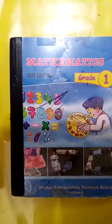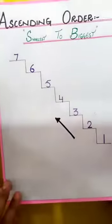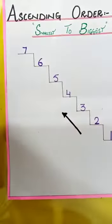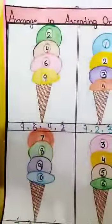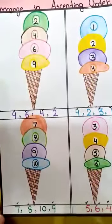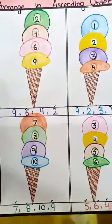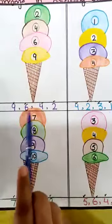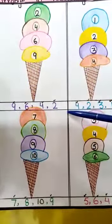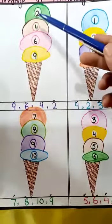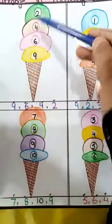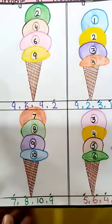Let's revise ascending order again, and then we have a worksheet. Ascending order means from smallest to biggest. Arrange them in ascending order — isko hum ne ascending order mein arrange karna hai. We have the numbers 9, 6, 4, 2. The smallest number is 2, then 4, then 6, then 9. From smallest to biggest — that order is called ascending order.